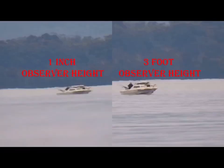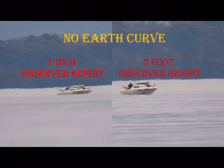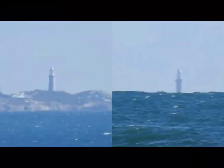Now comparing these two images on the left the observer height is one inch and on the right the observer height is three foot. And you can see clearly that the boat has started to disappear bottom up. There is no earth curve as you can see the horizon in the background. But both boats are starting to disappear bottom up. Let's add some more distance.